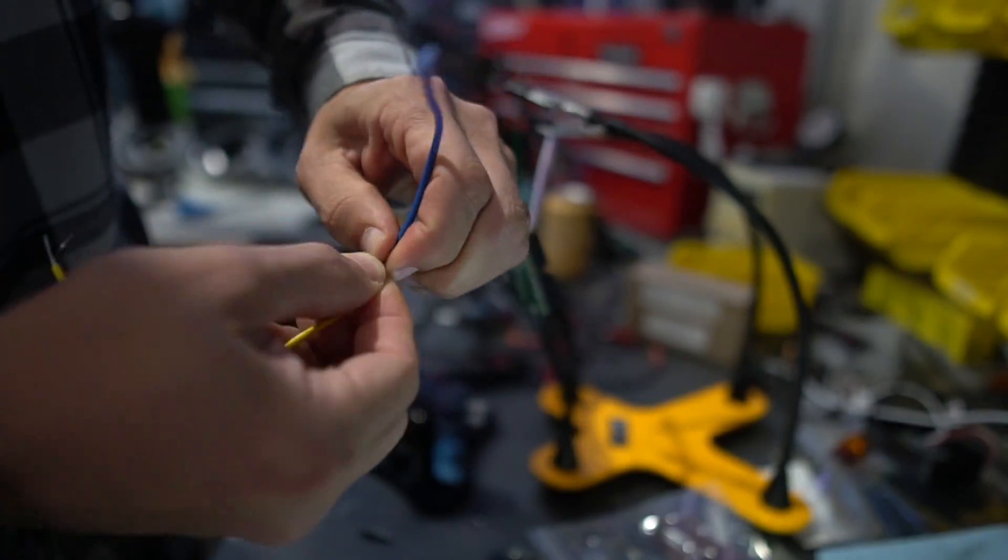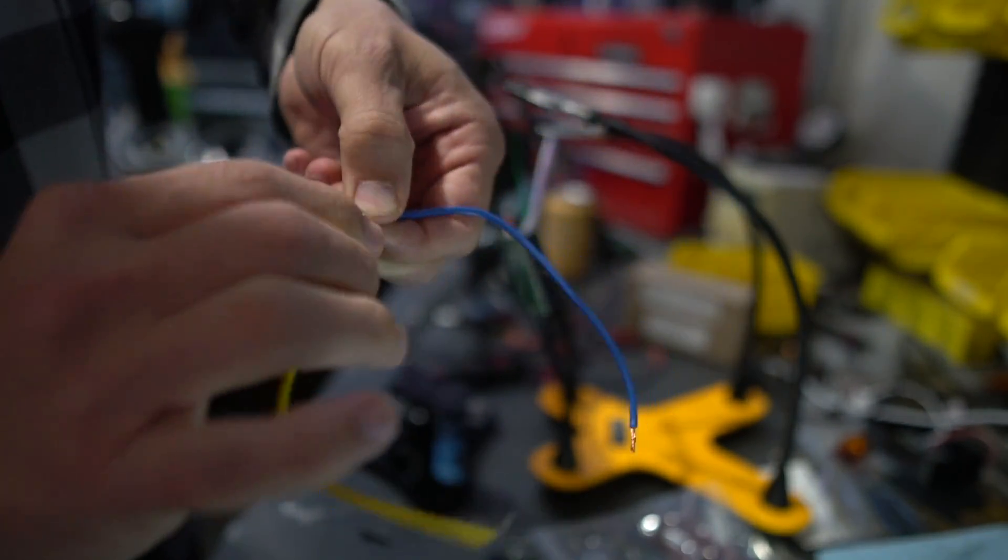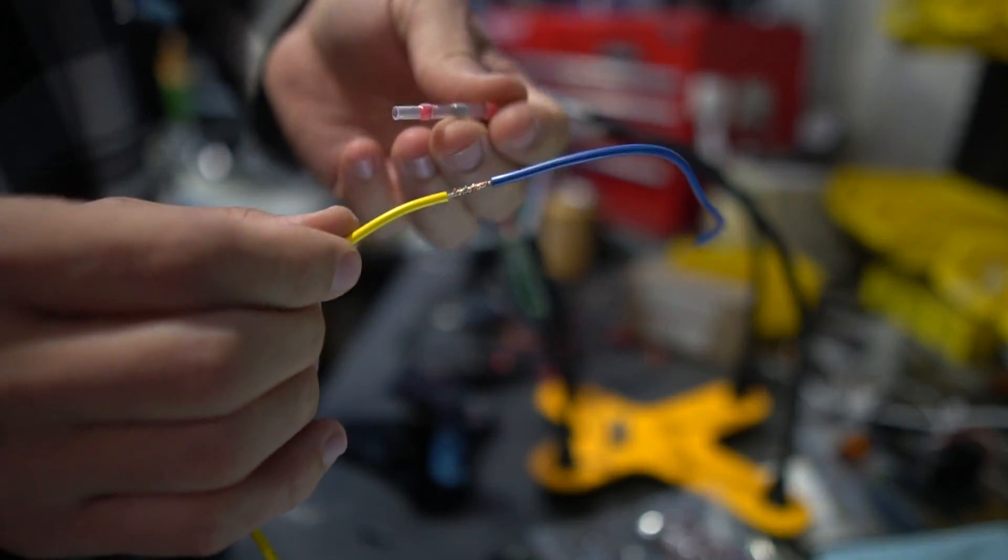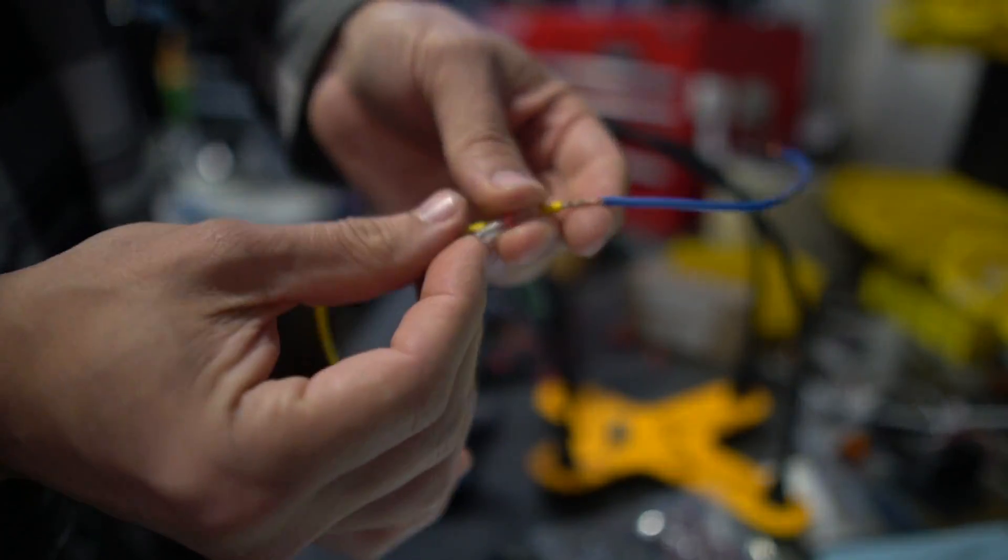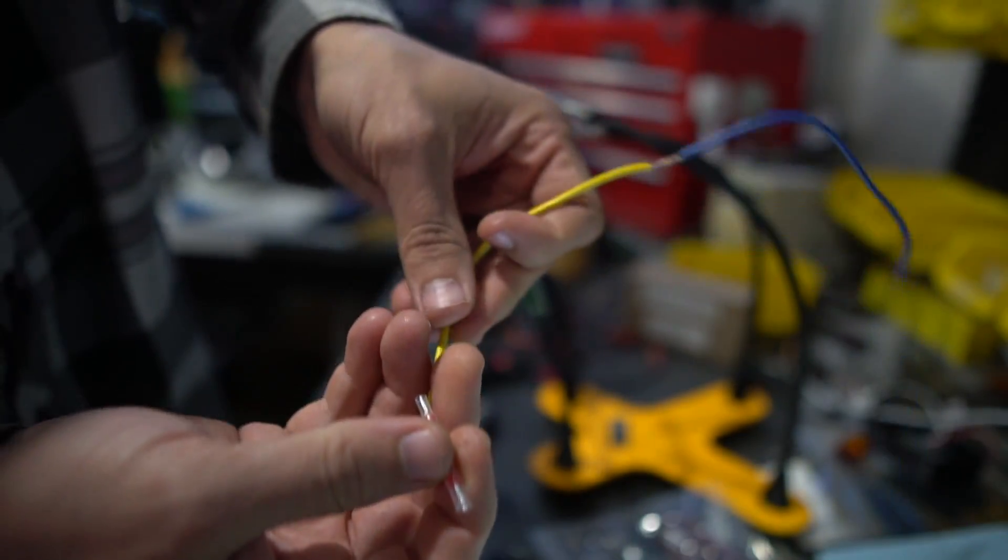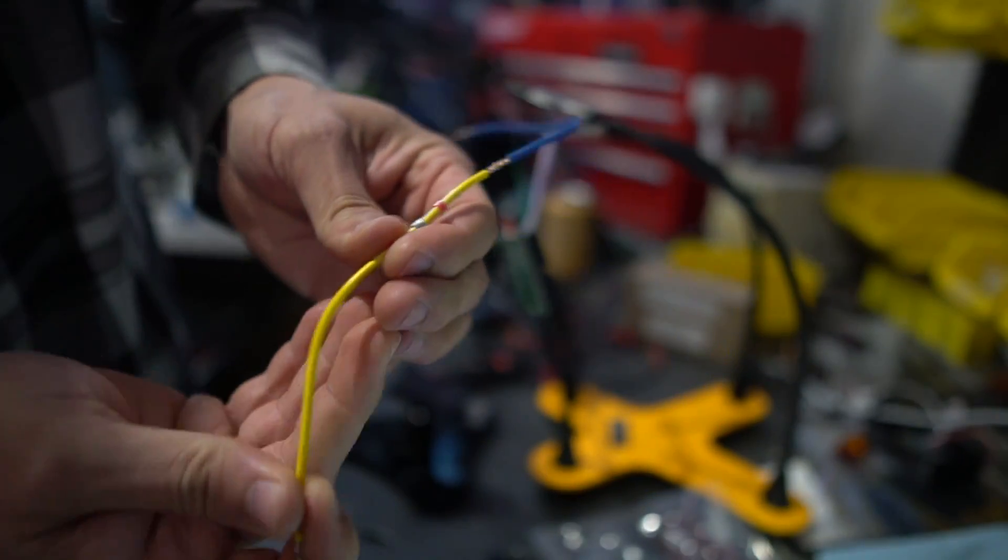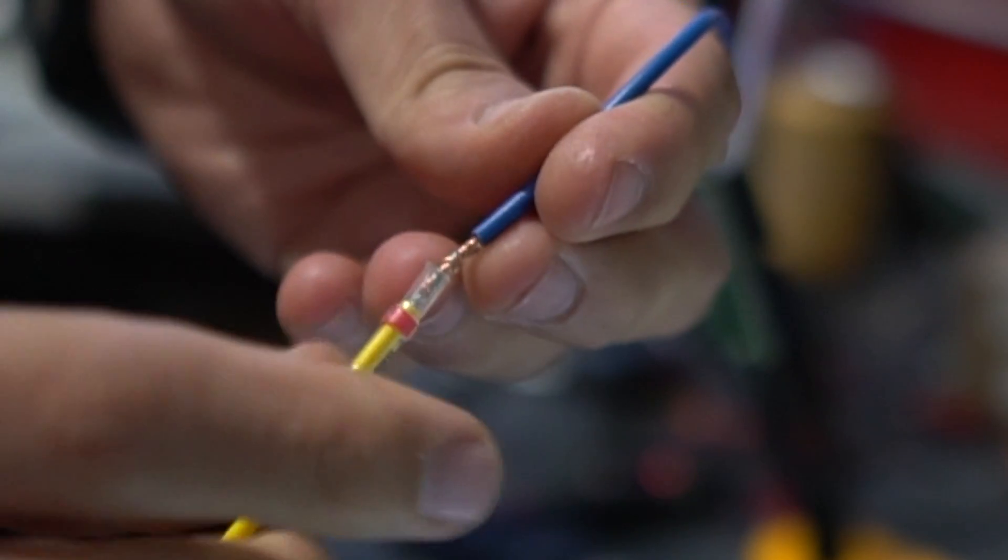So I strip them and I'm just twisting to get a nice tight little connection there. And now that I have that in place, I'm going to take one of these connectors that has solder right in the middle of it as well as the heat shrink to keep it nice and watertight. I'm just going to slide it down right over that connection that I made.